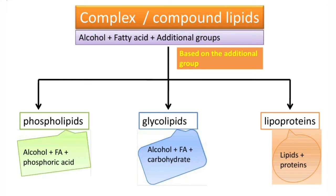Complex lipids, also called compound lipids, are the second class of lipids. Their composition is alcohol plus fatty acids plus additional groups. Simple lipids have only alcohol and fatty acids, but if there is an additional group, we call them complex or compound lipids. Based on that additional group, we classify them as phospholipids, glycolipids, and lipoproteins.